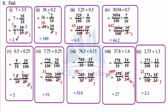For 36 divided by 0.2: write 36 as it is, division as it is, 2 over 10 — representing the decimal as a fraction. 36 as it is, division to multiplication and flipping gives 10 over 2. Cutting opportunity: 1×2 is 2, 18×2 is 36. So 18 into 10 is 180 — the whole number again is 180.